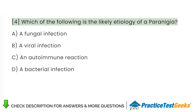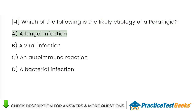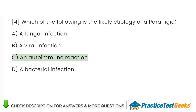Which of the following is the likely etiology of a paronychia? A. A fungal infection. B. A viral infection. C. An autoimmune reaction.